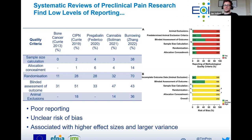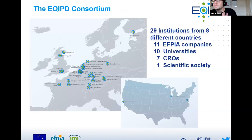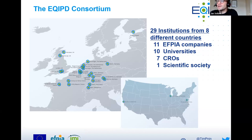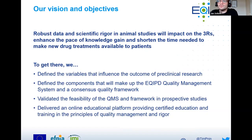Now, what can we do about this? This was the Equipped Consortium — the precursor of GoEquipped that hosts this series. It's a European consortium of 28 institutions from eight countries, including roughly half European pharma companies and 10 universities working together on this topic. The vision and objectives of Equipped were to produce and promote robust data and scientific rigor in animal studies, enhance the pace of knowledge gain, and shorten the time needed to make new drugs available to patients — by cutting out a lot of that research noise.